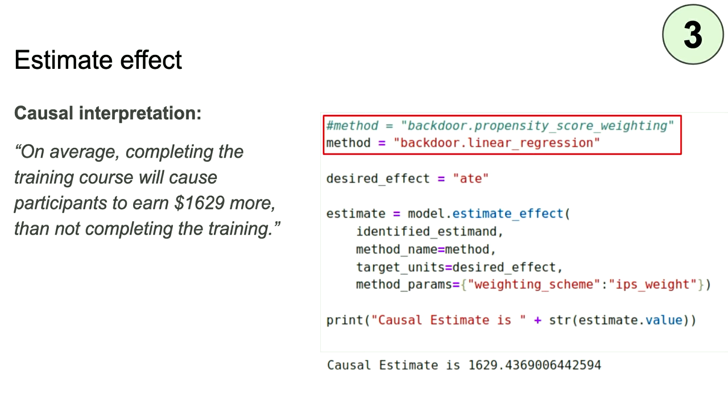The third of our four steps is estimating the effect — again, it's just a single function call. You can select from a range of models built in and supported by DoWhy, and you can also access models from the EconML package. Having done this on our dataset, we get the result that the causal estimate is $1,629 more. And because we've got a causal model, we can actually make a causal interpretation: given our prior assumption — that graph, that domain knowledge we provided — if you accept that as being correct, then on average, completing this training course causes participants to earn $1,629 more than not completing the training. By bringing the causal analysis and model into the study, we're able to go from a statement about one variable being associated with another to an actual causal interpretation.